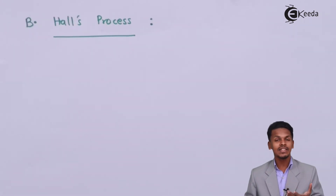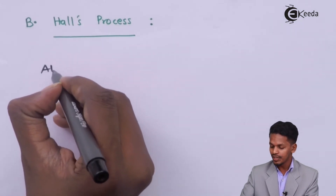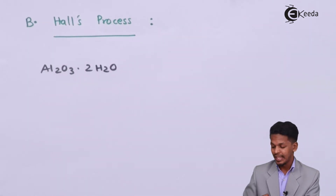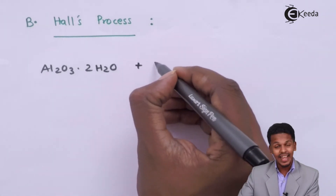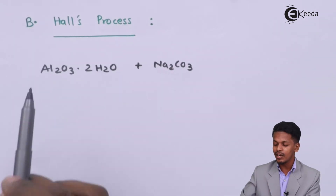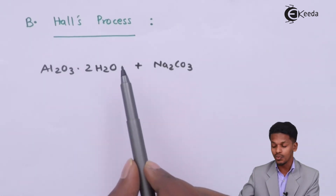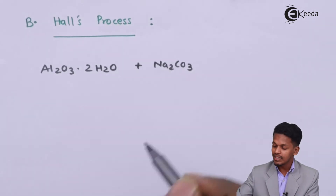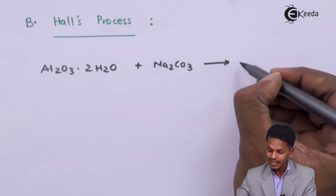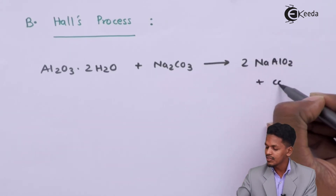Hall's process is another method for leaching of alumina from bauxite. In this case we consider Al₂O₃·2H₂O as the pulverized ore. This pulverized ore is treated with Na₂CO₃. In Bayer's process we treated Al₂O₃ with NaOH, but in Hall's process we treat Al₂O₃·2H₂O with Na₂CO₃. The reaction produces sodium meta-aluminate along with two moles of Na₂O₂, carbon dioxide, and water.